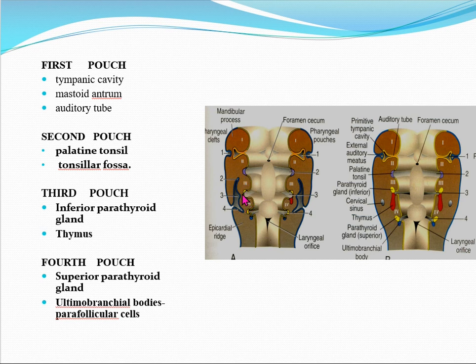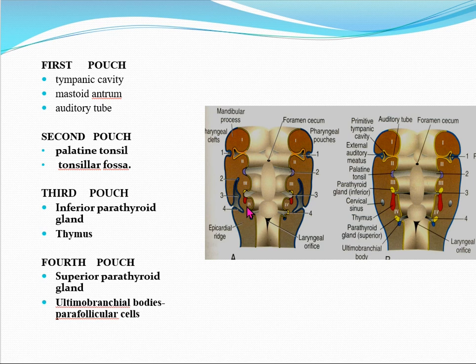The third pharyngeal pouch gives rise to two structures: the inferior parathyroid gland and the thymus. The fourth pharyngeal pouch gives origin to the superior parathyroid gland and the ultimobranchial bodies.